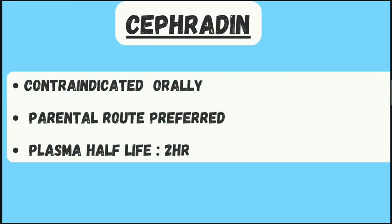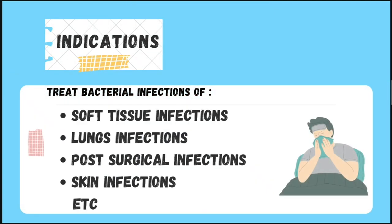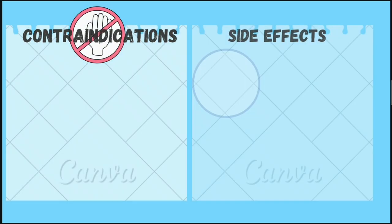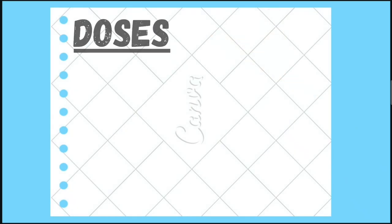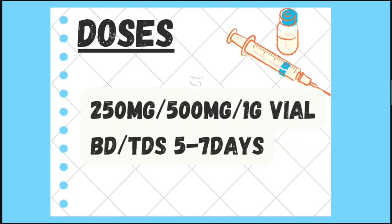Now we'll move to cephazolin. It is contraindicated orally — if prescribed orally it will definitely cause diarrhea — so the parenteral route, that is IV, is preferred. It has the same plasma half-life of two hours as the others. It is indicated in soft tissue infections, lung infections, post-surgical infections, and skin infections. It has the same contraindications and side effects as the other first-generation antibiotics. The dose is 250 mg, 500 mg, or 1 gram, given BD or TDS for 5 to 7 days.